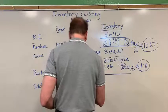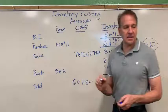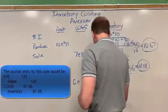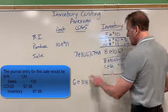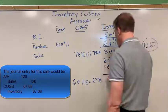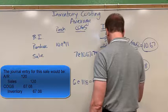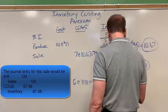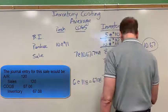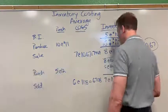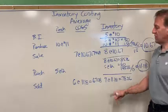Six at eleven eighteen is sixty-seven dollars and eight cents. That's my cost of goods sold. And so if I sold six and I had thirteen, that means I've got seven left at the average of eleven eighteen, which equals seventy-eight dollars and twenty-six cents.